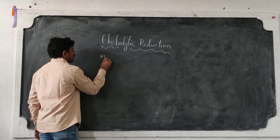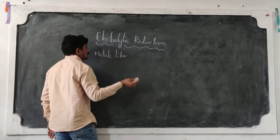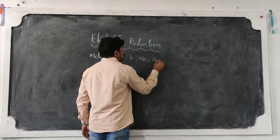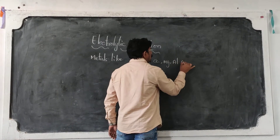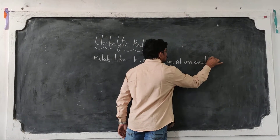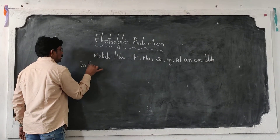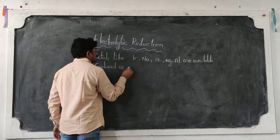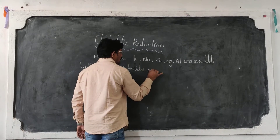Metals like potassium, sodium, calcium, magnesium, and aluminum are available in the combined state as halides and oxides.